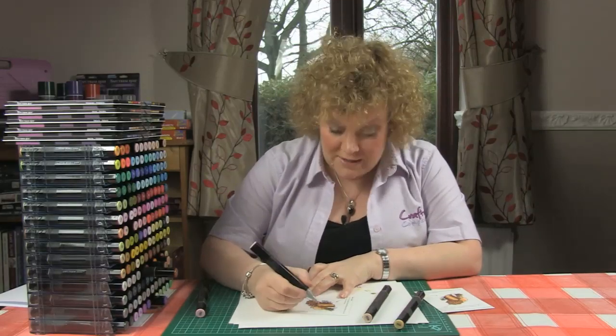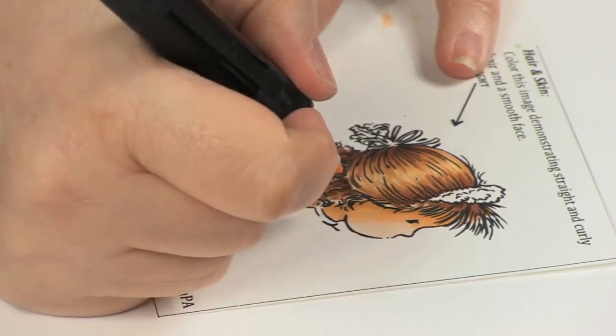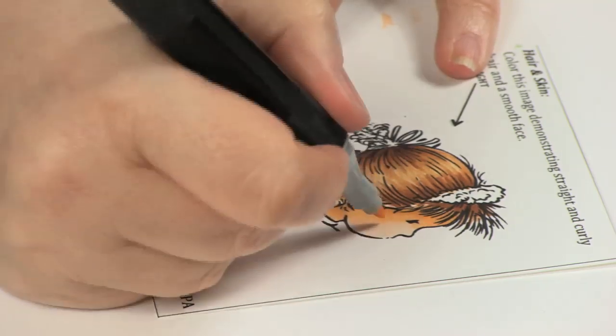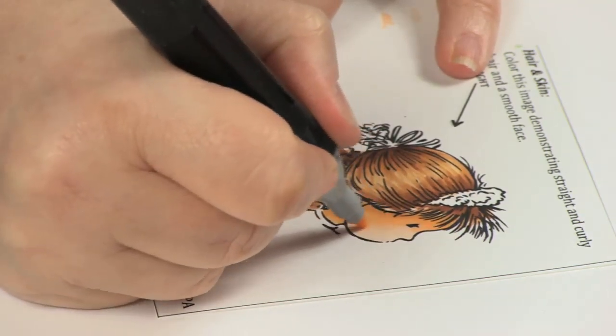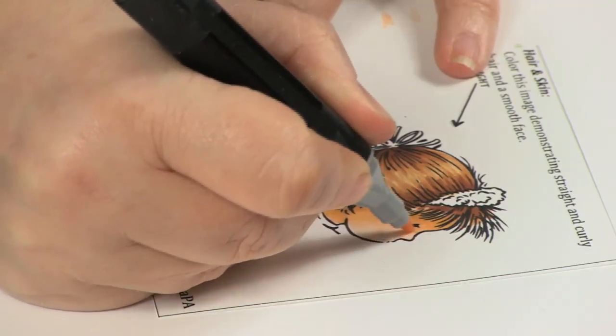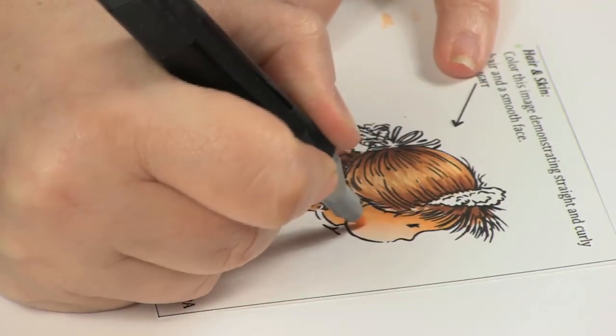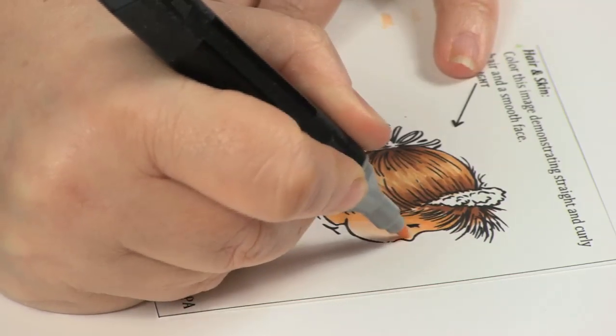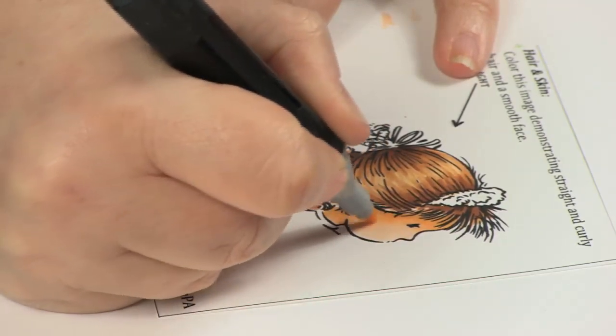Now I've got FS2 and I'm going to blend the FS9 back into the first layer of FS2 with the FS2 pen. Again, I'm coming up to the edge, not going right back over all the coloring, just to the edge of it to smooth that edge into the first layer.